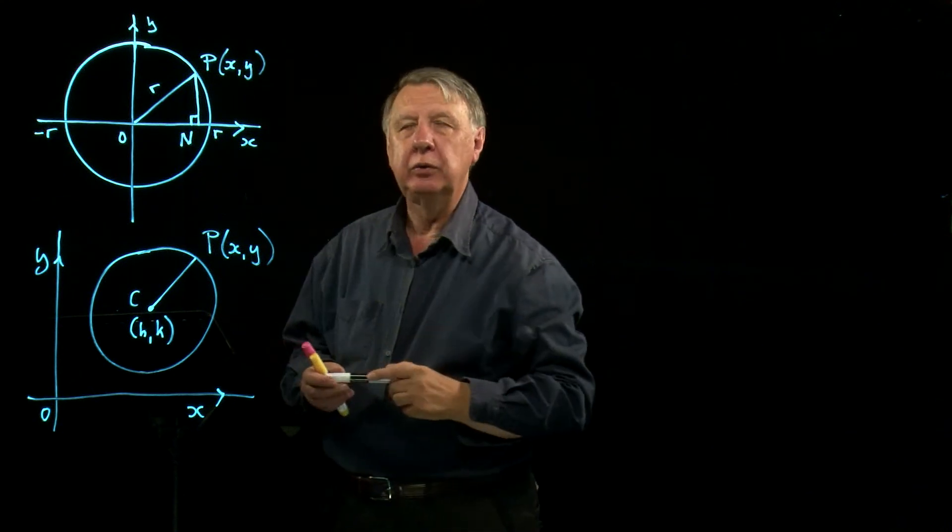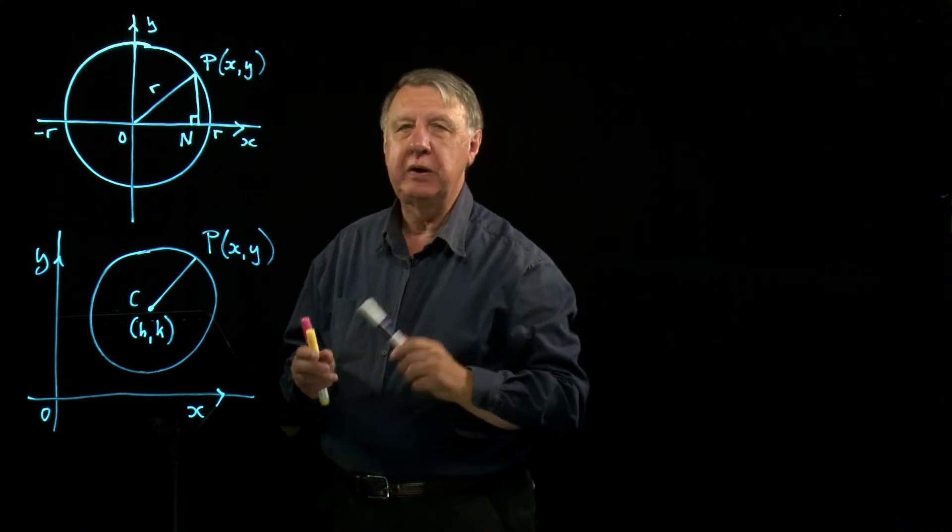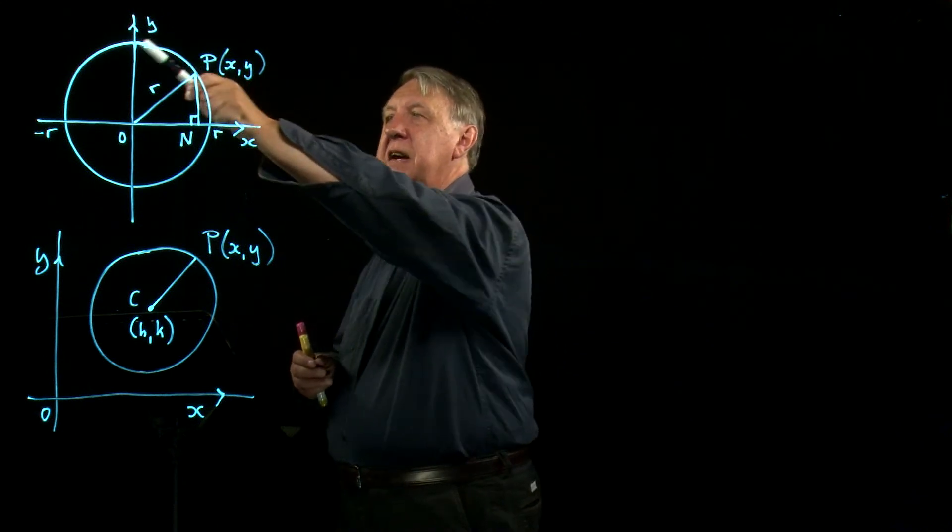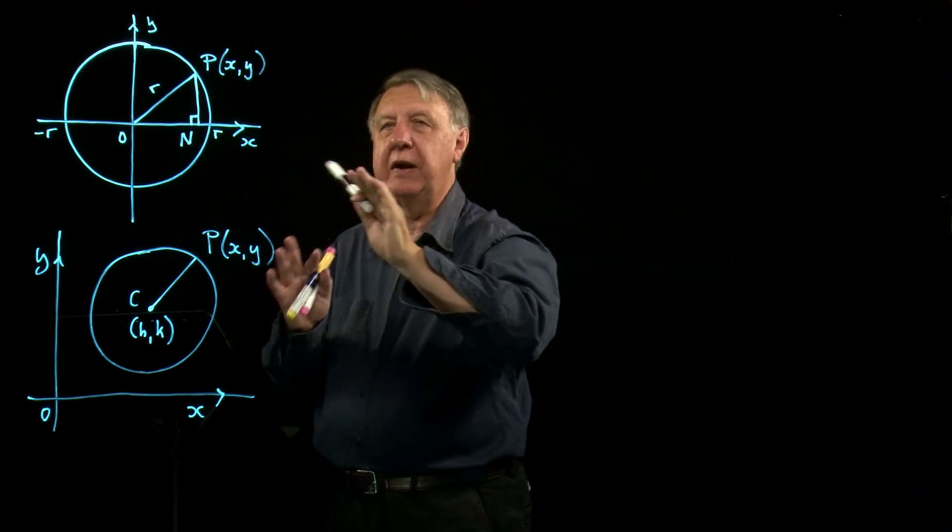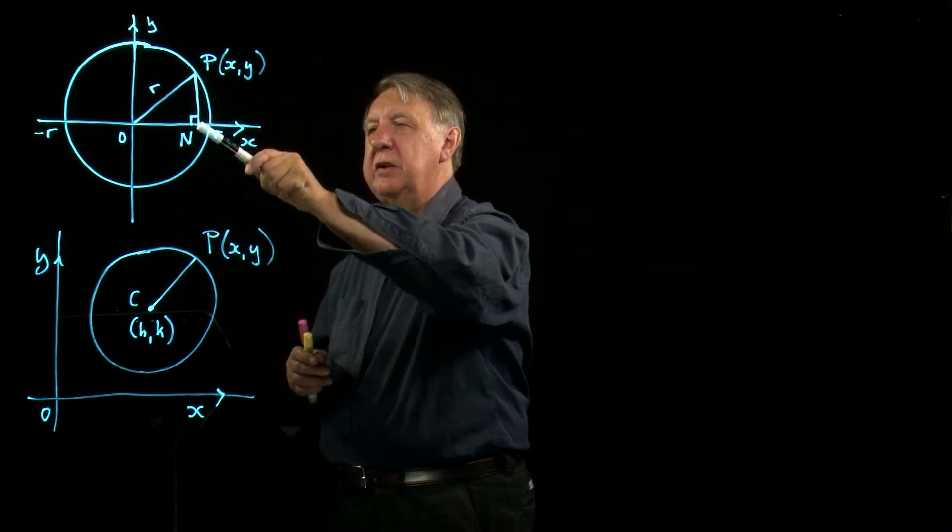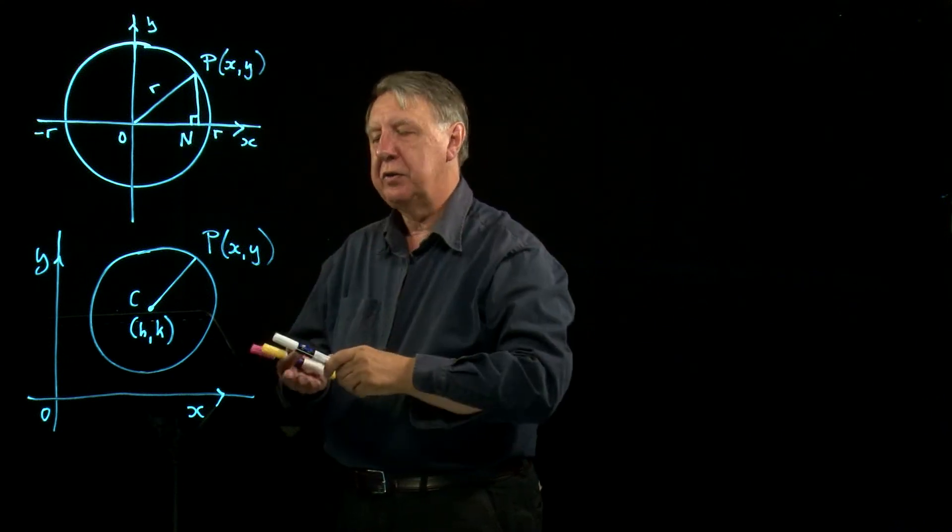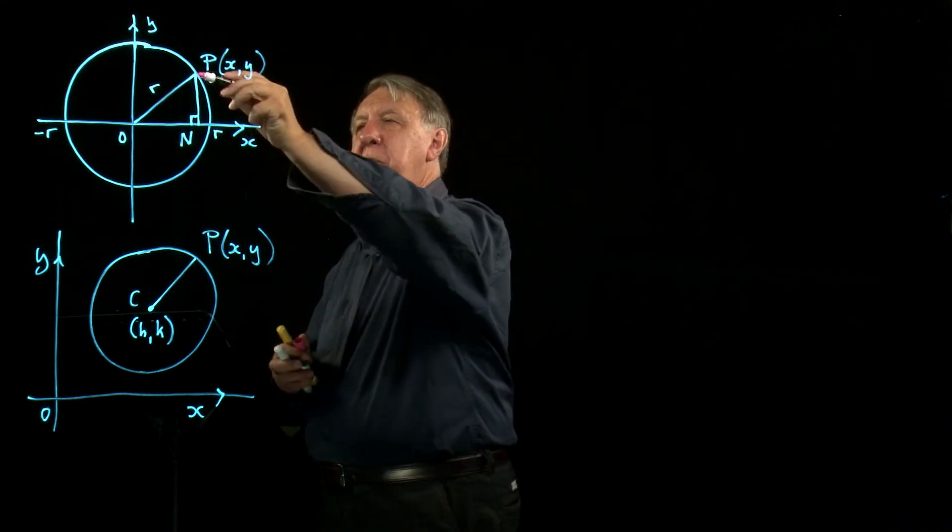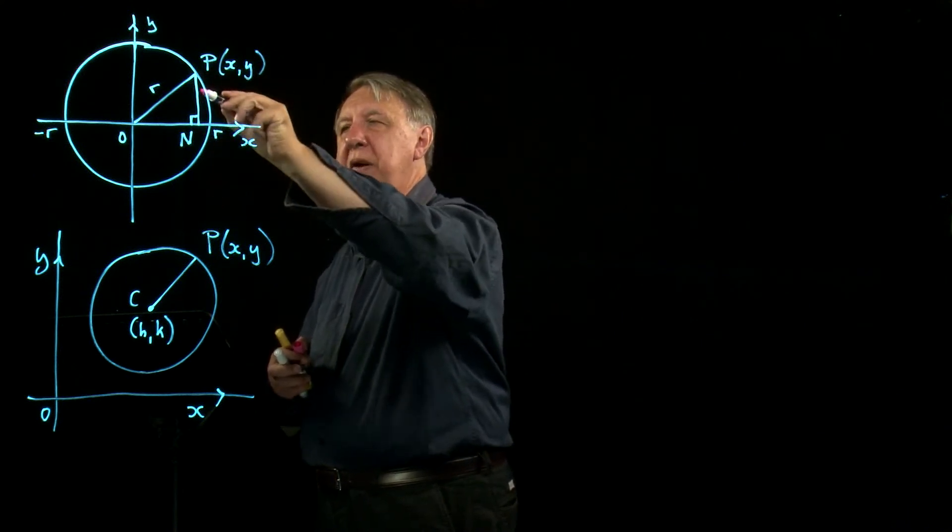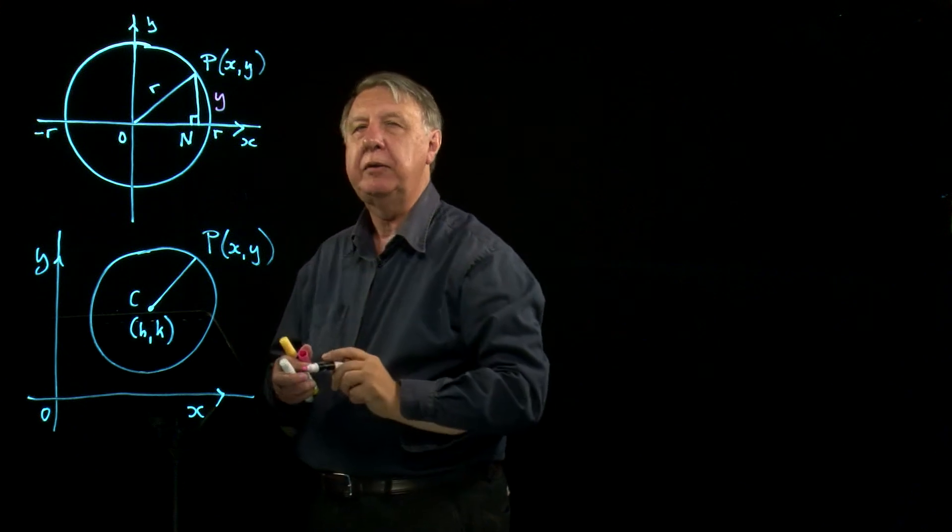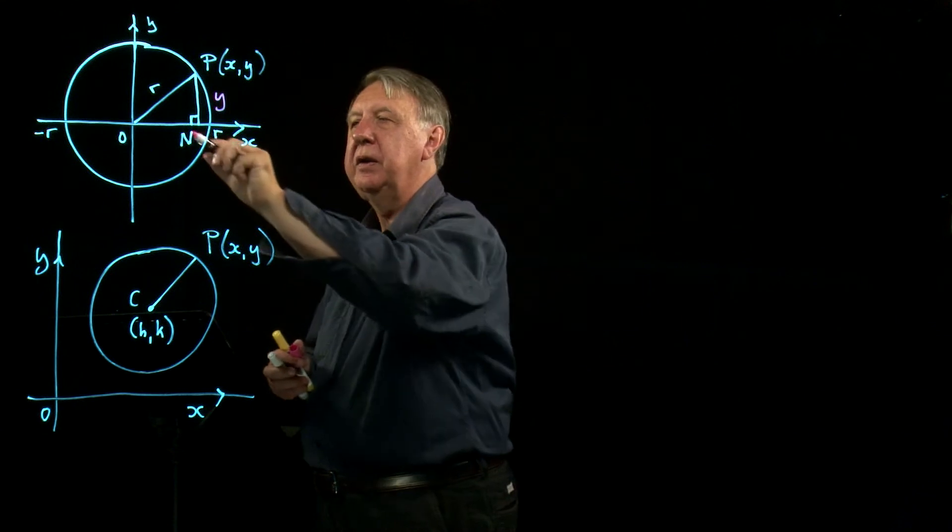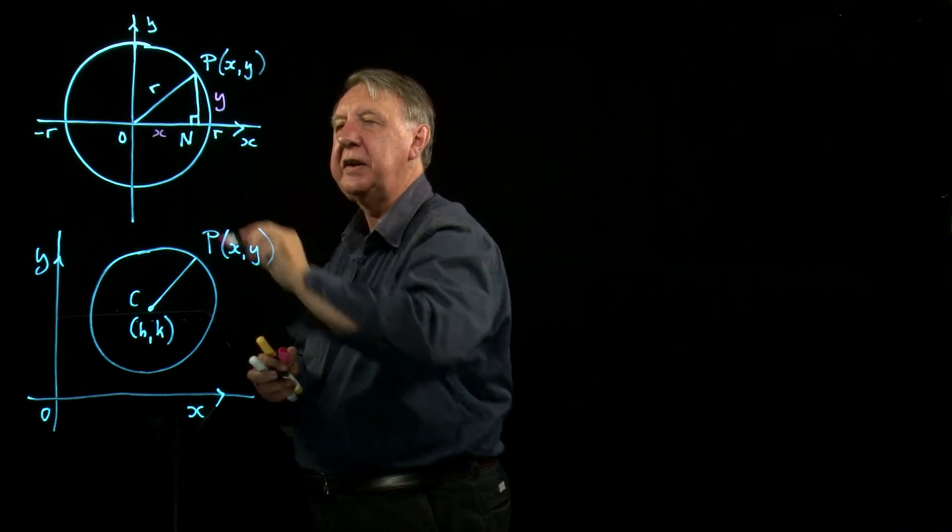I want to know what is the connection between X and Y, the X and Y coordinates of this point P, if it stays on the circle. Well, I have here a nice triangle. And certainly on that triangle, PN is the Y coordinate of the point P, so PN is actually Y. And O to N is the X coordinate of P, so ON is equal to X.